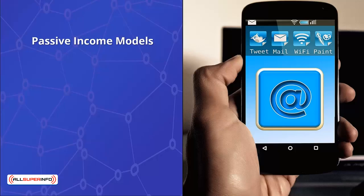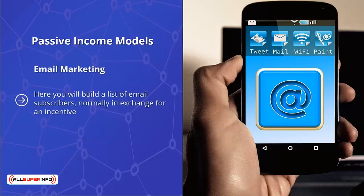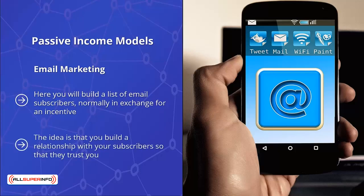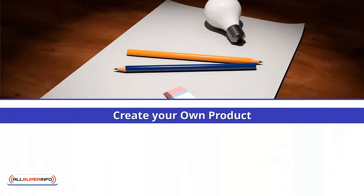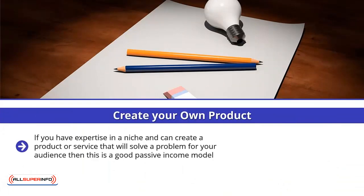Passive income models: there are many passive income models. Here are some of the most popular ones. Email marketing — here you will build a list of email subscribers, normally in exchange for an incentive. You can use the services of an autoresponder to send automatic email sequences out to every subscriber, and you can send a broadcast message to part or all of your list whenever you want. The idea is that you build a relationship with your subscribers so that they trust you, and you can then send them promotional offers.